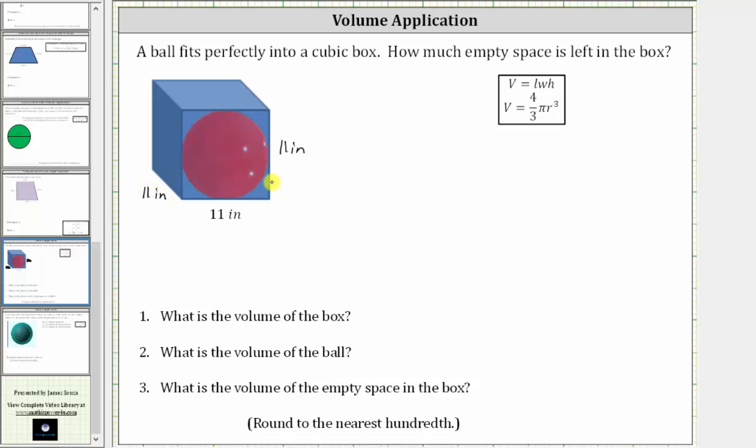And since the volume of a right rectangular prism is equal to length times width times height, the volume of the box, which we'll call V-sub-box, is equal to 11 inches times 11 inches times 11 inches, which is equal to 11 cubed, which is equal to 1,331. And because the lengths are in inches, the volume is in cubic inches or inches cubed. So let's go ahead and record this below.